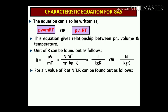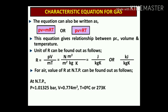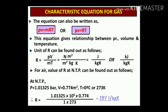For air, the value of R at normal temperature and pressure can be found as follows. At NTP, P = 1.01325 bar, volume of air = 0.774 m³, and T = 273 degrees Kelvin. Substituting these values into the equation gives R = 287 joules per kg·Kelvin. That is the value of R for air at NTP conditions.